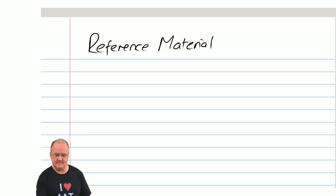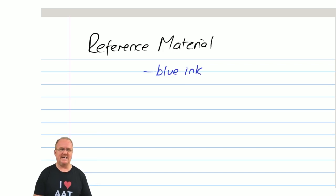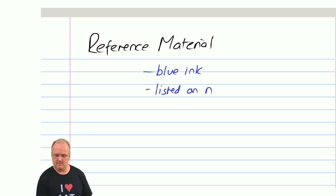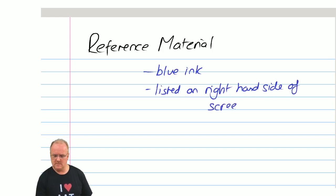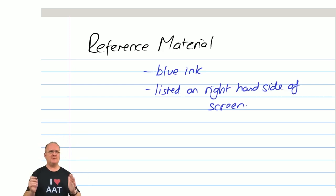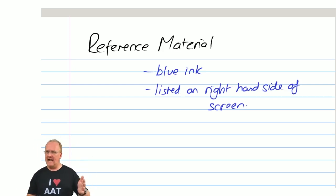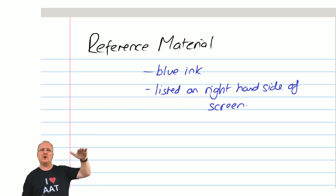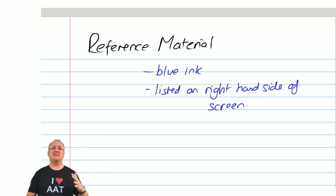You'll find this typically in blue ink, listed on the right-hand side of the screen. So when you do the actual assessment, you'll find it on the right-hand side as a list of contents, and you can click on any of those and go and read the reference material that is there.